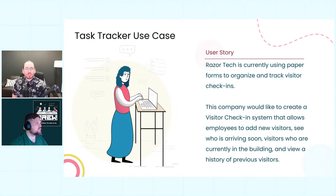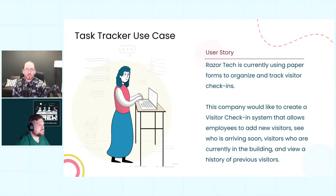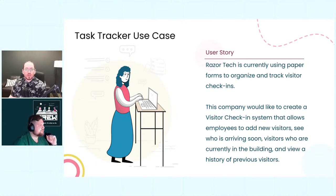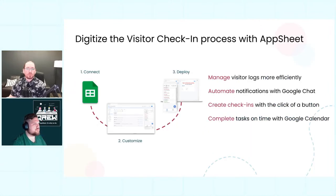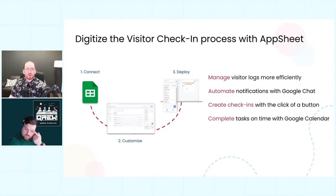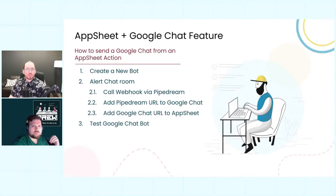We created a fictional company called Razor Tech. They're currently using paper forms to organize and track visitor check-ins. The company would like to create a visitor check-in system that allows employees to add new visitors, see who's arriving, see who's currently in the building, and view a history of previous visitors. This will allow them to manage visitor logs more efficiently, automate notifications with Google Chat, create check-ins with the click of a button, and complete tasks on time with Google Calendar.